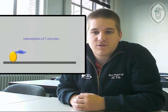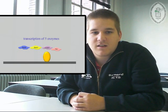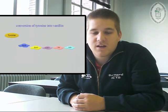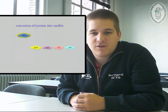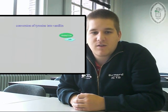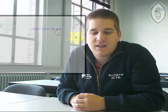Each of these enzymes is used to convert tyrosine into vanillin. The E. coli cell produces tyrosine on its own. SAM8 converts it into p-coumaric acid, which is then converted into caffeic acid by SAM5. Next, the caffeic acid is converted into ferulic acid by COMT, then feruloyl-CoA by FCS, and finally into vanillin by ECH. The produced vanillin is then pushed out of the cell into the environment where we can eventually smell it.